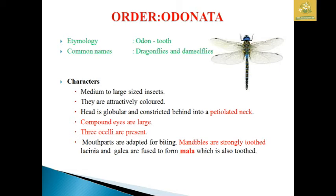The etymology: 'Odonto' means tooth, referring to the tooth-shaped mandibles. Common names are Dragonfly and Damselfly. Characteristics: medium to large attractively colored insects. The head is globose and constricted behind into a slender neck. Large compound eyes and three ocelli are present; mouthparts are adapted for biting.